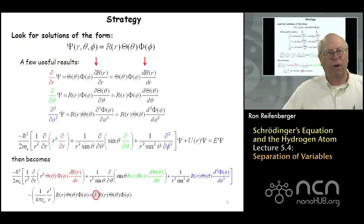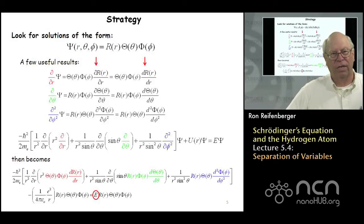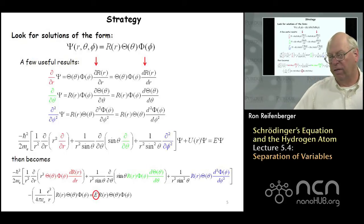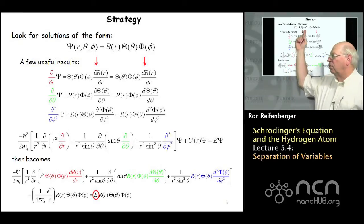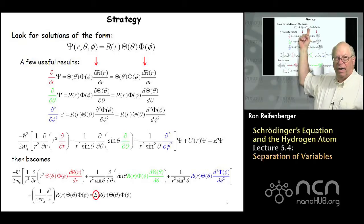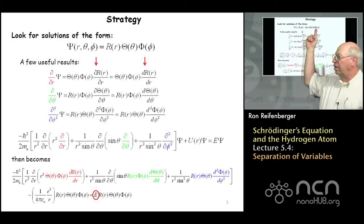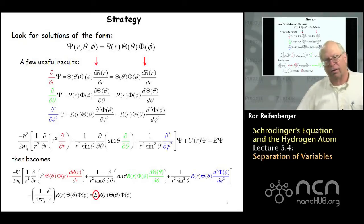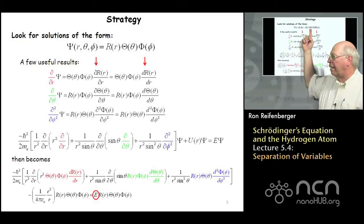If we want to think about this problem analytically, the effort is more involved than these qualitative sketches. The strategy is that the solutions for capital Psi will be comprised of the product of three wave functions: capital R, which depends solely on the radial parameter r; capital Theta, which satisfies the theta part; and capital Phi, which satisfies the phi part of the wave function.